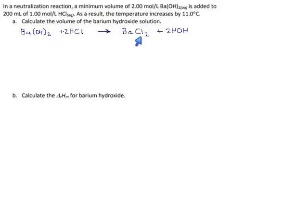They've told us we had 2 mol/L barium hydroxide — that's its concentration — and the concentration of the hydrochloric acid is 1 mol/L, and the volume of the hydrochloric acid is 0.2 liters. That should be enough for us to get the amount of barium hydroxide. The number of moles of hydrochloric acid comes from N = CV, so it's 1 times 0.2, giving us 0.2 moles of hydrochloric acid.